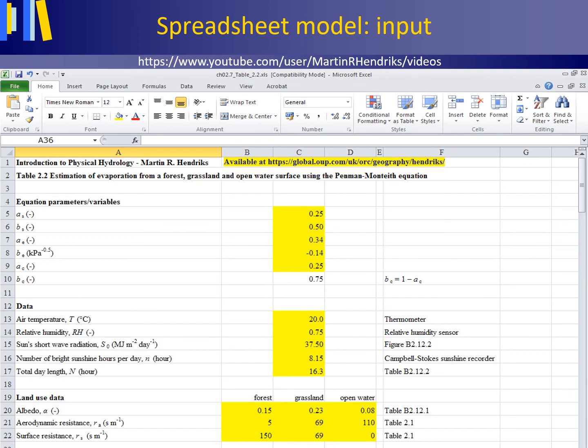The spreadsheet allows you to insert input values on meteorological data such as air temperature, relative humidity, sun shortwave radiation, number of bright sunshine hours per day, and the total day length, and land use data, the albedo, the aerodynamic resistance, and the surface resistance for forest, grassland, and open water.